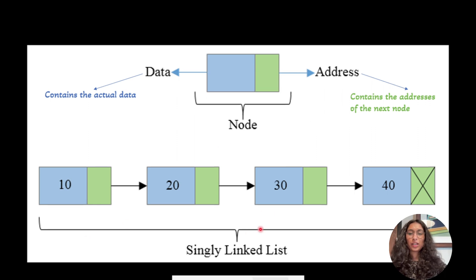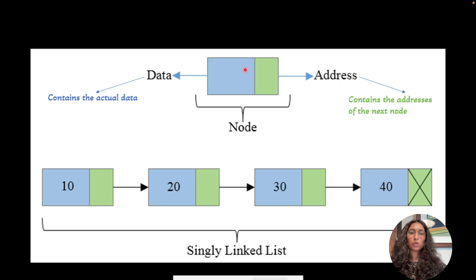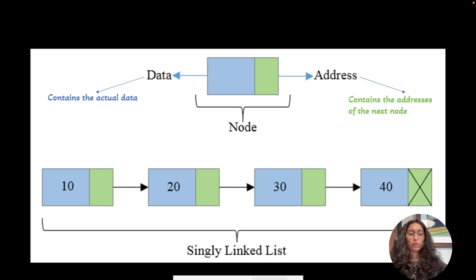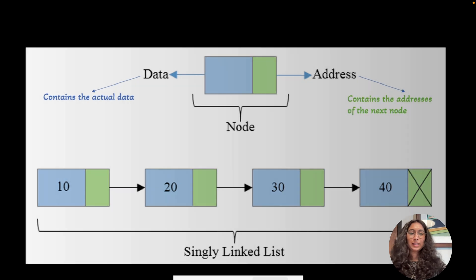This is our singly linked list, which can consist of multiple nodes. Here we can see there are four nodes in our singly linked list. Each node consists of data and addresses. The data contains the actual data, and the addresses contain the address of the next node.